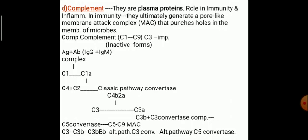C3B plus C3 convertase forms complement. The C5 convertase forms C5 to C9 MAC. C3B — alternate pathway C3 convertase — leads to the alternate pathway C5 convertase.